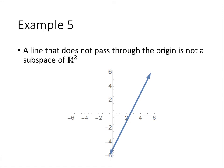Another non-example: a line that does not pass through the origin is not a subspace of R2. First, since it doesn't pass through the origin, it doesn't contain the zero vector. Second, it's not closed under addition — if we take two vectors in the line and add them using the parallelogram rule, the sum is generally not on the line.